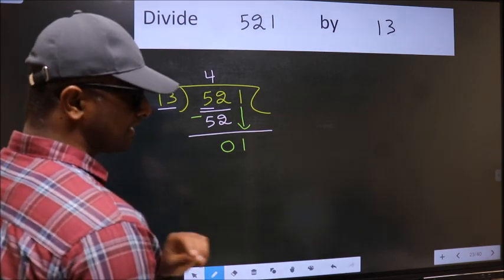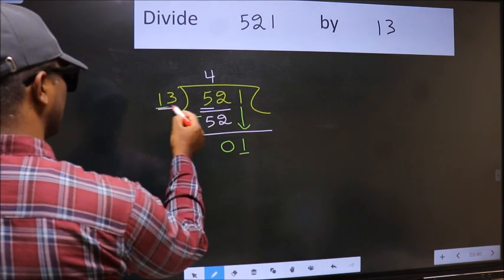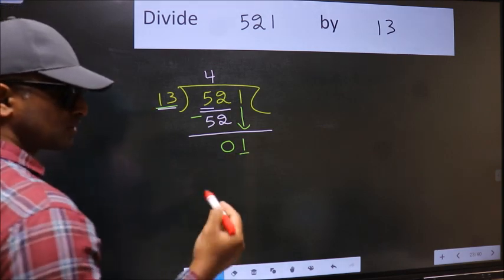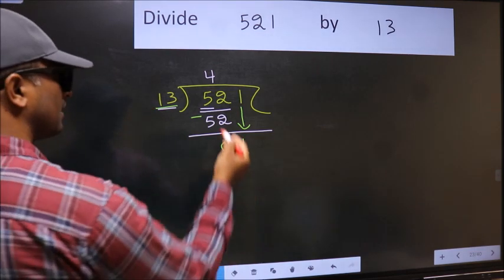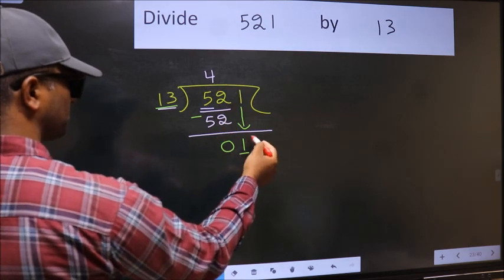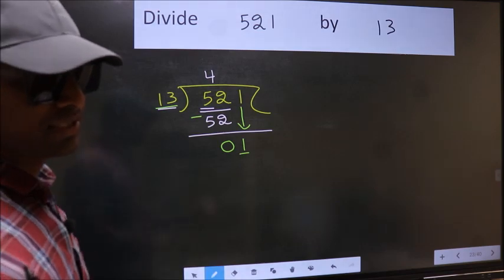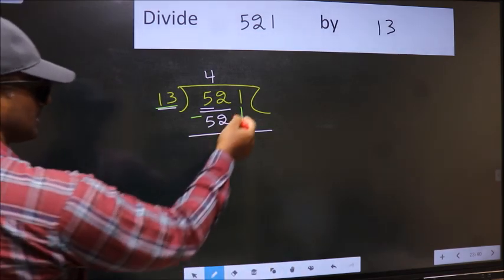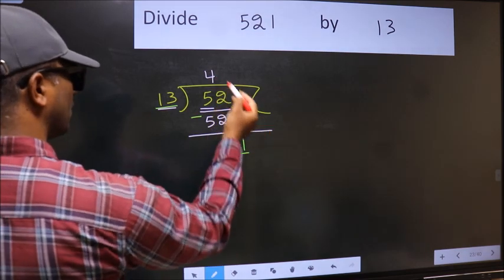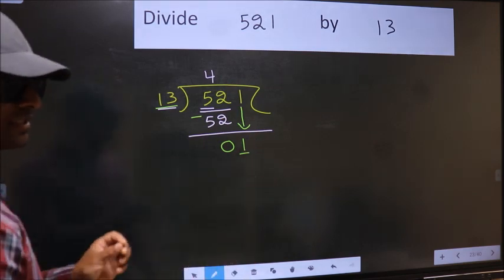And the mistake is this. Here we have 1 and here 13. 1 is smaller than 13. So what many do is they directly put a dot and take 0, which is wrong. Why is it wrong? Because just now you brought this number down, and in the same step you want to put dot and take 0, which is wrong.